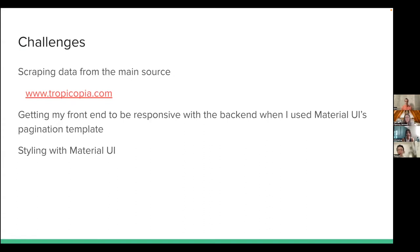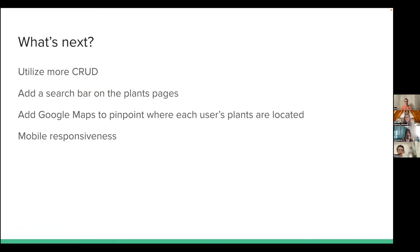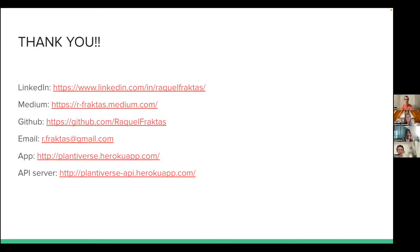Getting those two technologies to talk and handling routing — plus some styling with Material UI wasn't very mobile-friendly, so I had to do a lot of custom editing. Things I could add: more full CRUD functionality for users, a search bar on the plant pages, Google Maps to pinpoint the origin of each user's plants, and better mobile responsiveness. Here is my contact info — LinkedIn, blog, repo, email, and links to access the app.